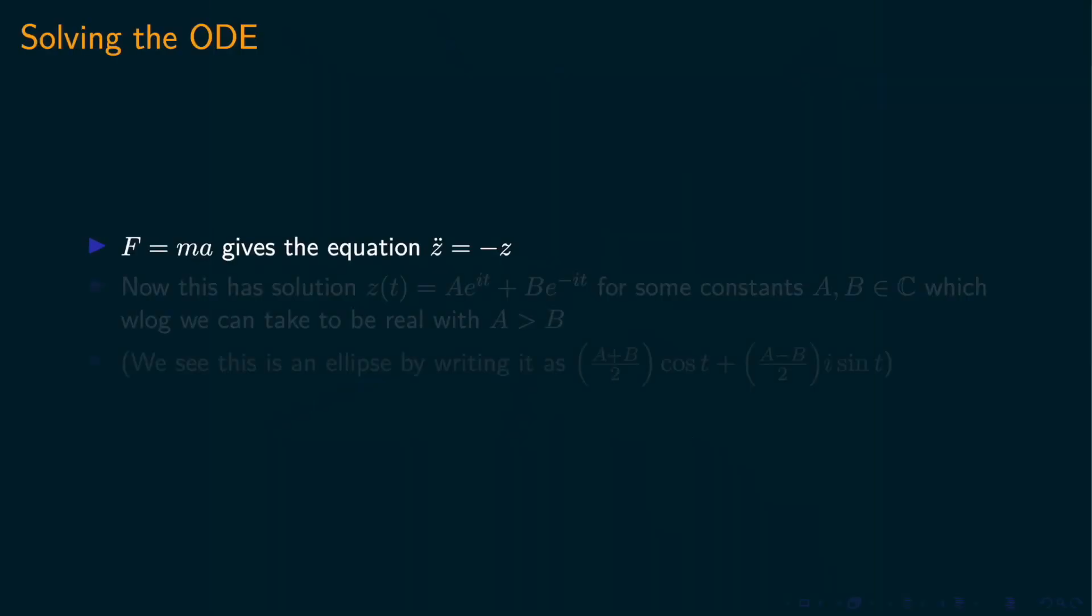If we look at Newton's equations of motion, we can see why we get an elliptical orbit. Let's work in the complex plane. Then the trajectory is the solution to z double dot of t equals minus z of t.